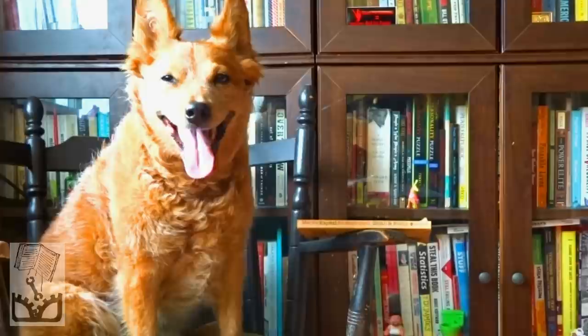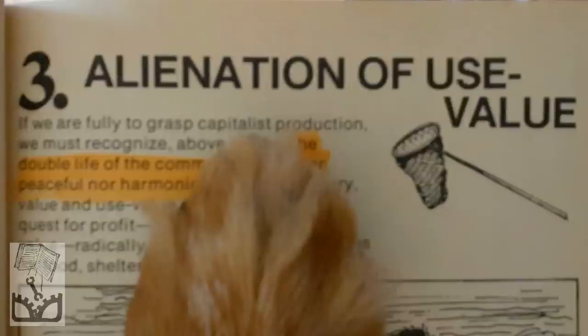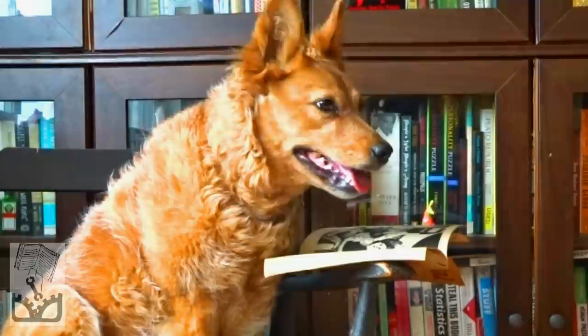It's almost like I already read this book. Chapter 3: Alienation of Use Value. Smith and Evans explain that if we are fully to grasp capitalist production, we must recognize above all that the double life of the commodity is neither peaceful nor harmonious. On the contrary, value and use value clash.